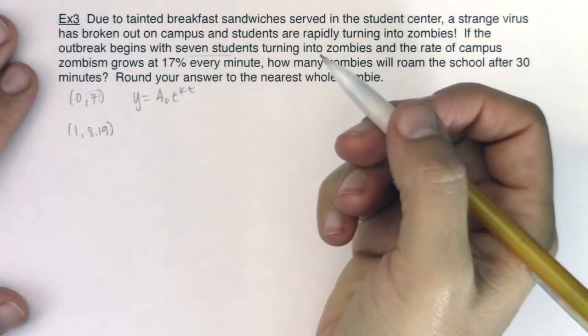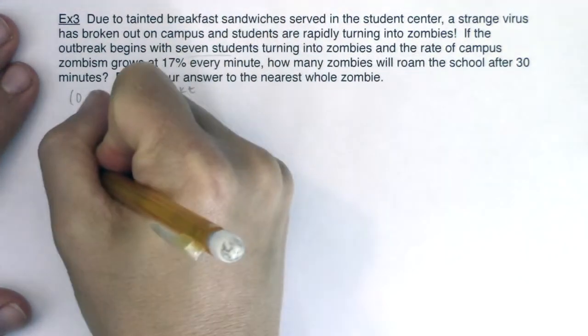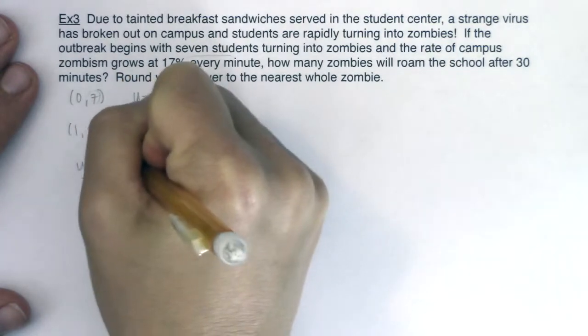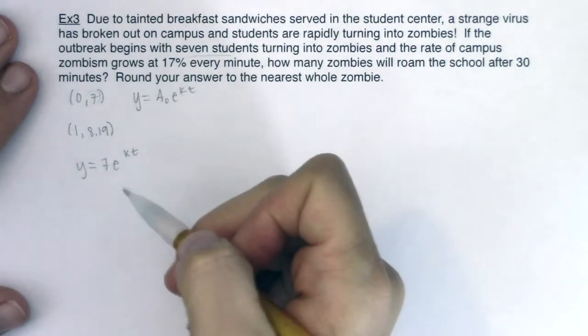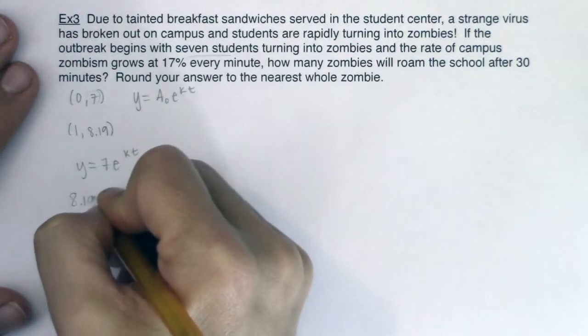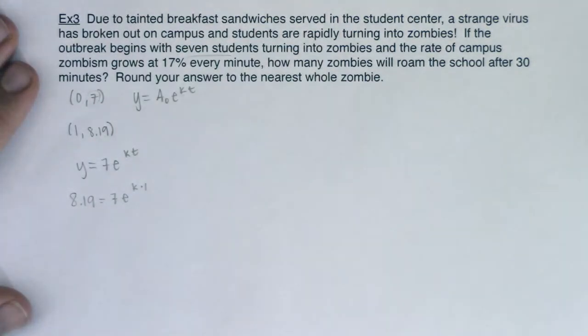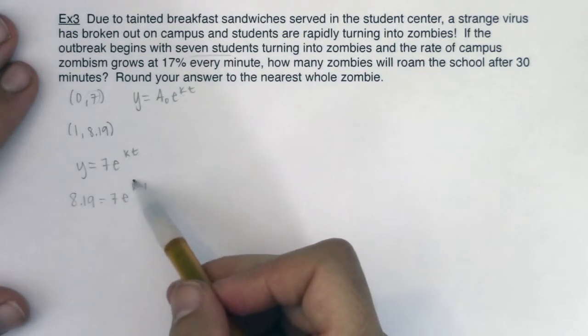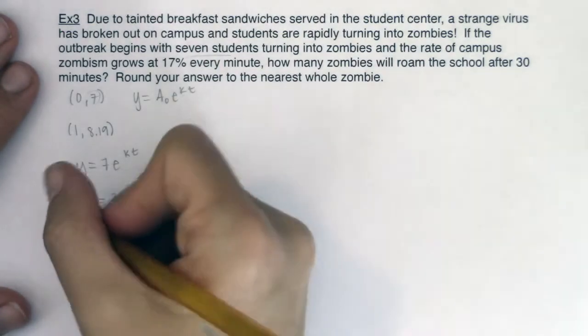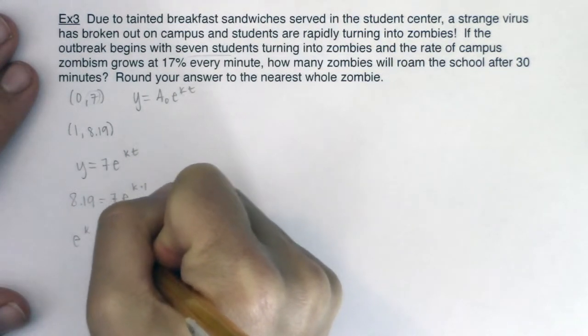There are my two ordered pairs so as I start to work through this I can see a sub 0 is 7 so at this point I know y is equal to 7e to the kt and I'm going to plug in 8.19 for y and 1 for t. So we'll get 8.19 is equal to 7e to the k times 1 or just e to the k. I want to solve for k so I need to isolate my exponential term. I'm going to divide both sides by 7 so I'm going to get e to the k being equal to 8.19 over 7.